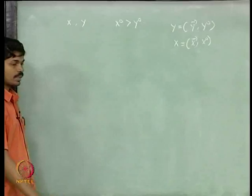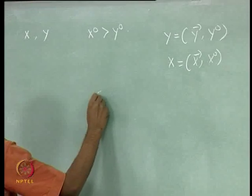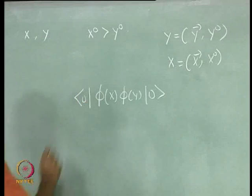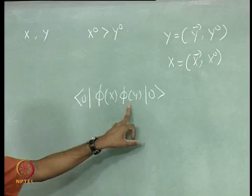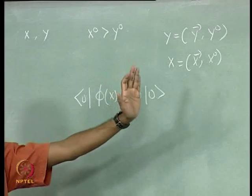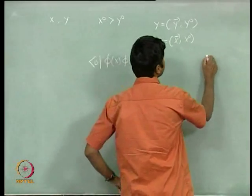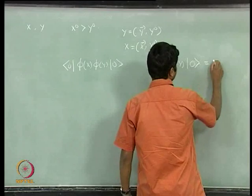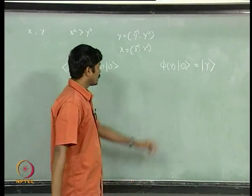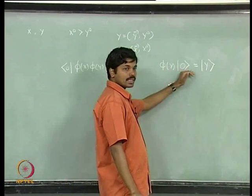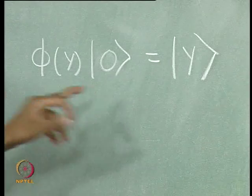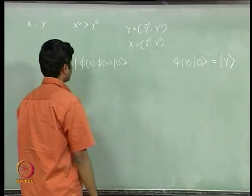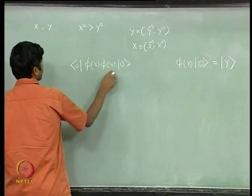The amplitude for this propagation is the vacuum expectation value of phi(x) phi(y). Remember, phi(y) has two components: one positive frequency component and one negative frequency component. When phi(x) phi(y) acts on the vacuum, the positive frequency components will annihilate the vacuum, and the negative frequency components will act on the vacuum to create a particle at y. So the amplitude for propagation from y to x is given by this quantity.